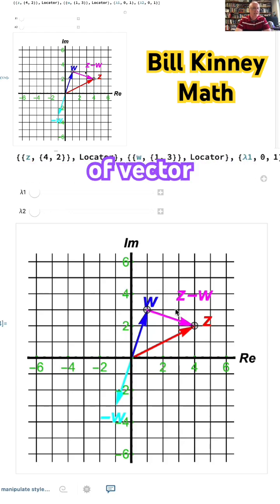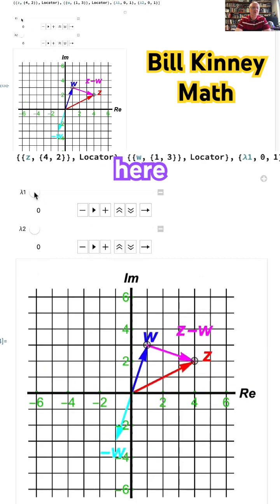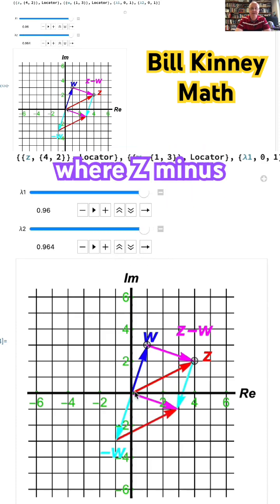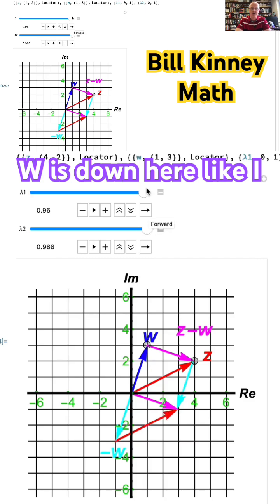We can also use these sliders here to move negative w and z to create a parallelogram to also illustrate where z minus w is down here, like I drew by hand as well.